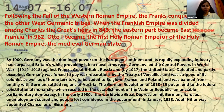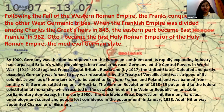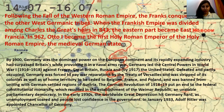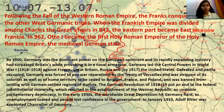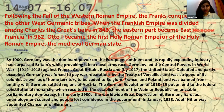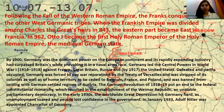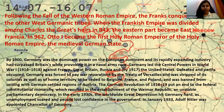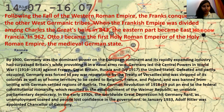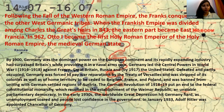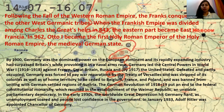Following the fall of the Western Roman Empire, the Franks conquered the other West Germanic tribes. When the Frankish Empire was divided among the heirs of Charlemagne in 843, the eastern part became East Francia. In 962, Otto I became the first Holy Roman Emperor of the Holy Roman Empire — the medieval German state.